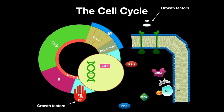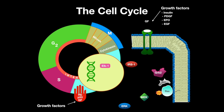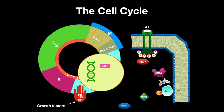Growth factors also mediate entry into the S phase. Growth factors such as insulin, PDGF, EPO, and EGF bind tyrosine kinase, which results in a downstream effect of transitioning into the S phase.